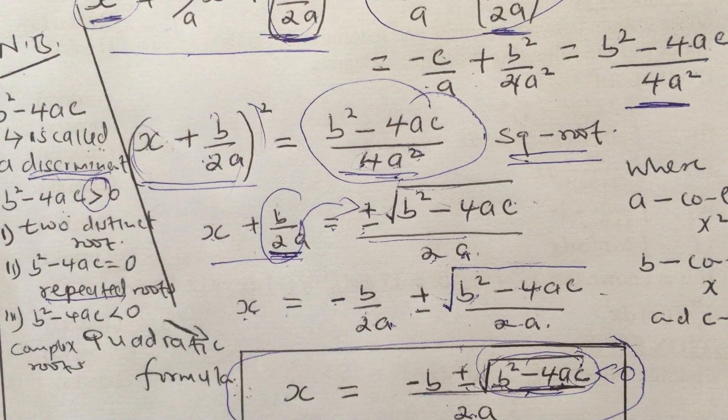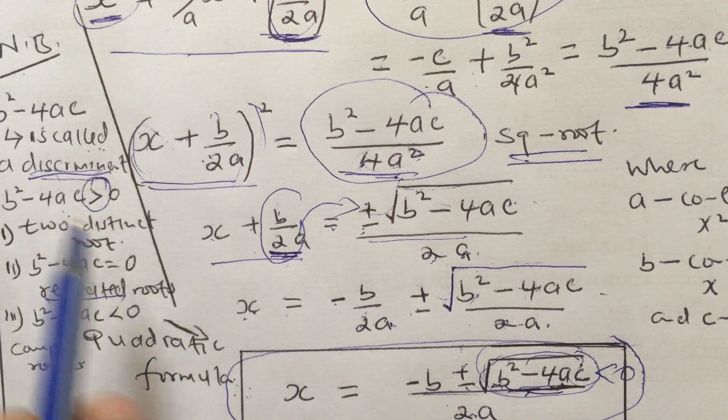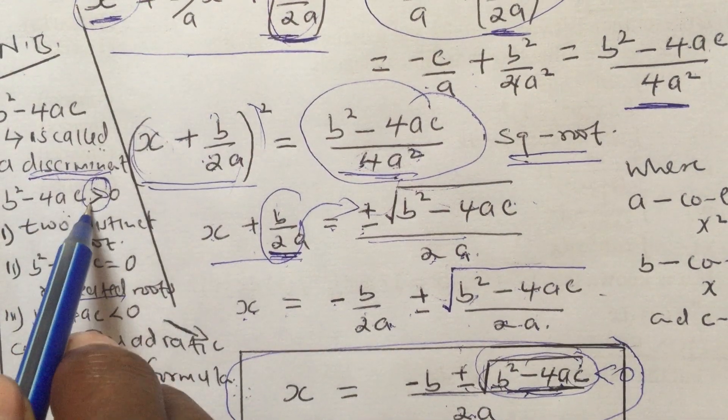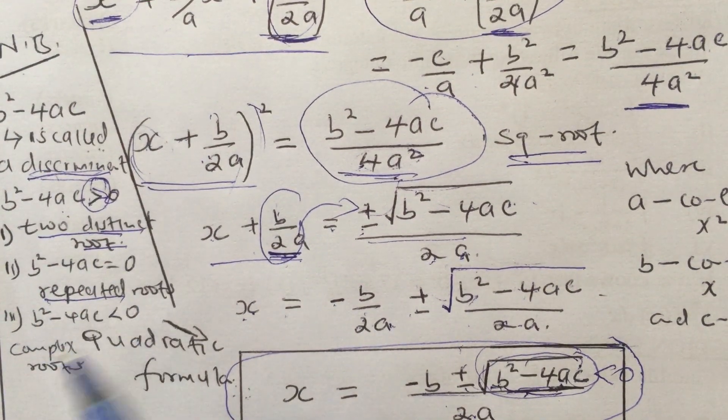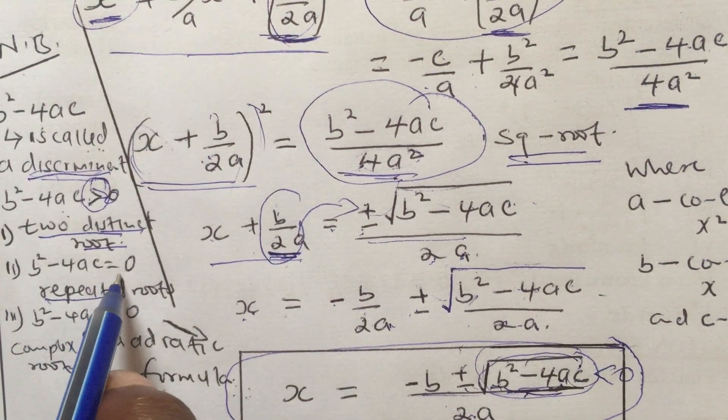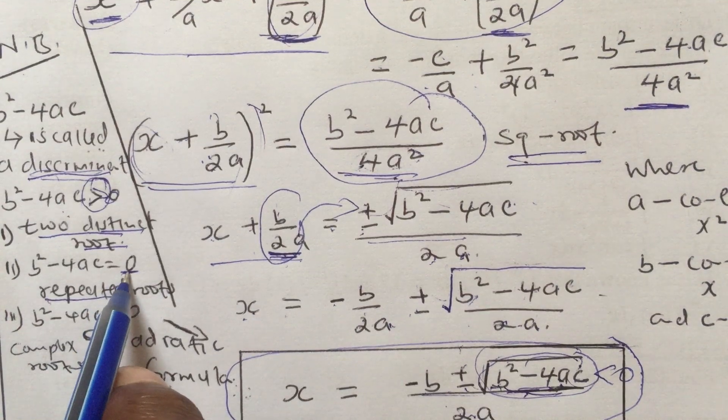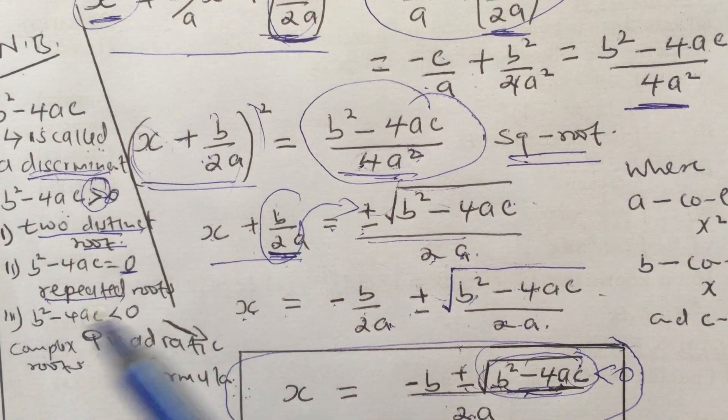If the discriminant is greater than zero, then we have two distinct or different roots. If the discriminant is zero, then we have repeated root or same roots.